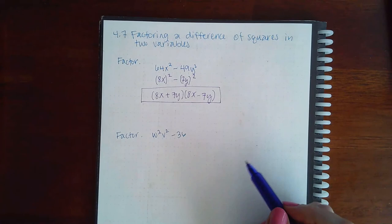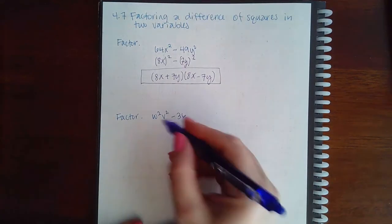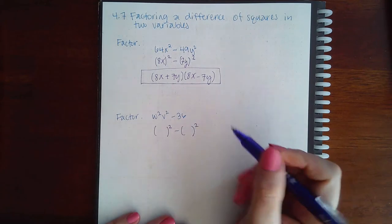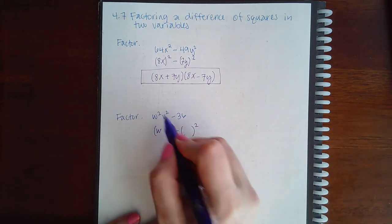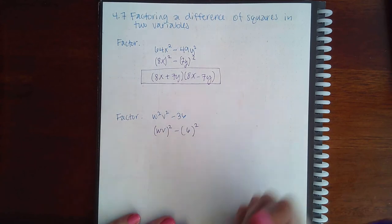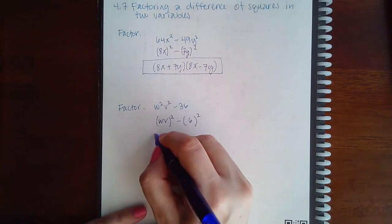Same thing here. I need to figure out what is being squared here and what is being squared here. Well, I know that I need a w to get a w squared and I need a v to get a v squared and I need a 6 to get a 36.